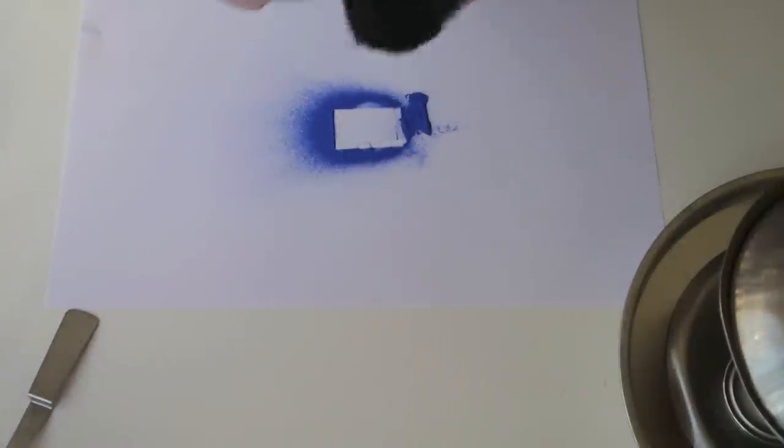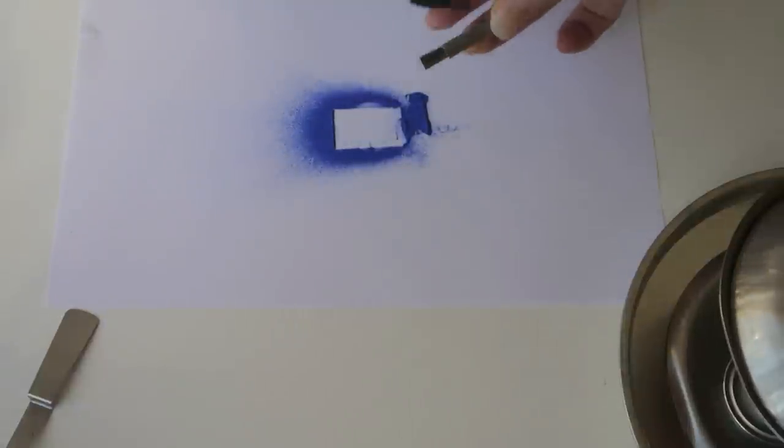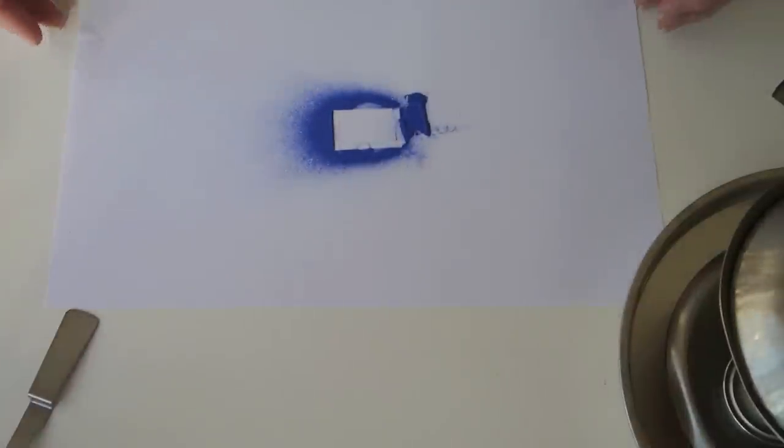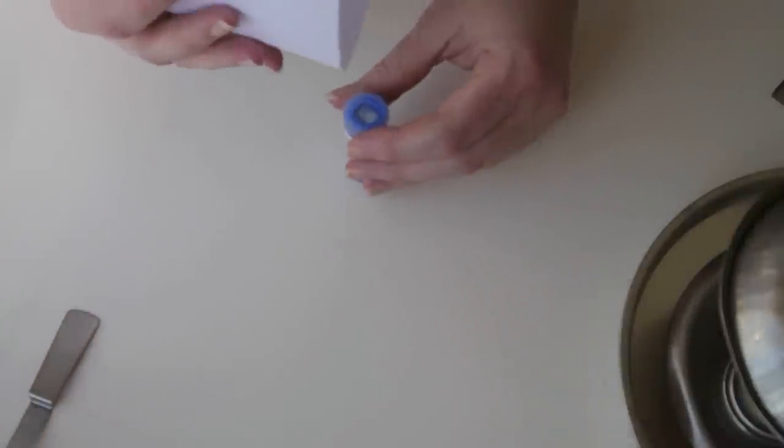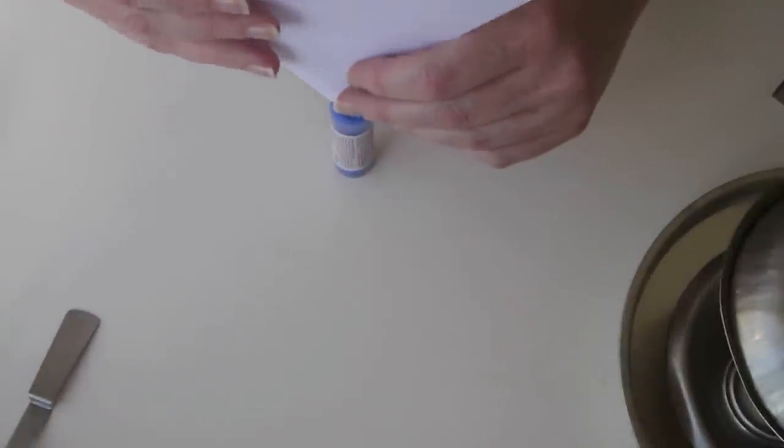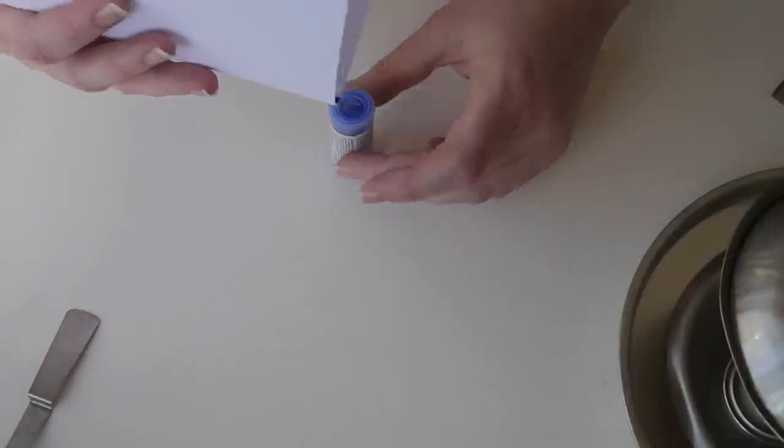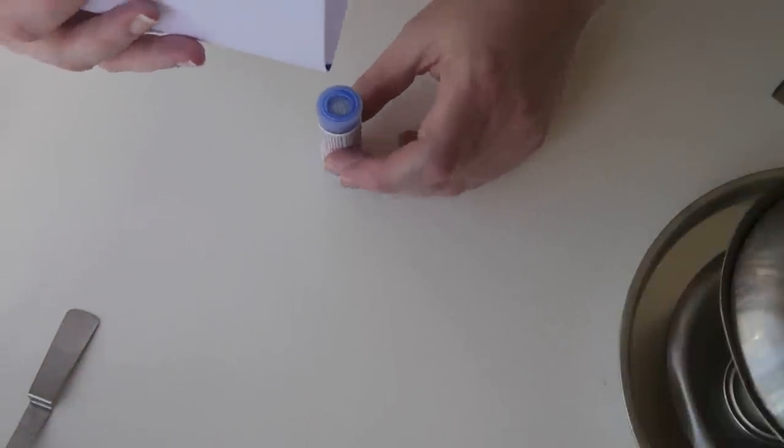Now I just use an old blusher brush just to dust off my U strip. This powder I'm not going to waste. I'm going to pop it back into my pot of powder. You should find that it does go back through the sieve top. Just give it a few taps.